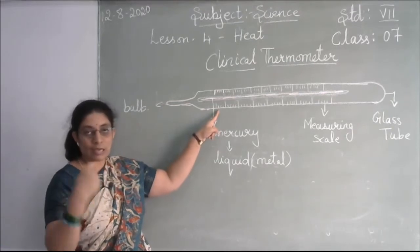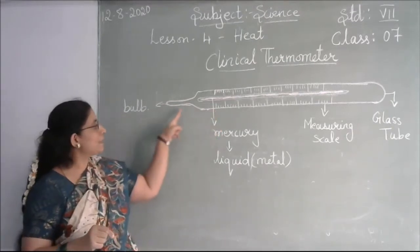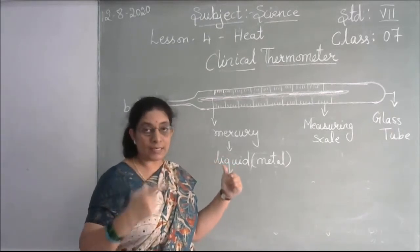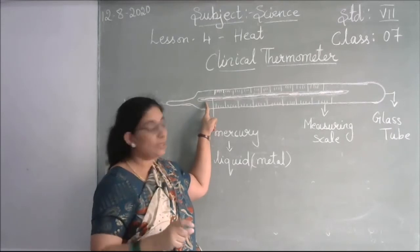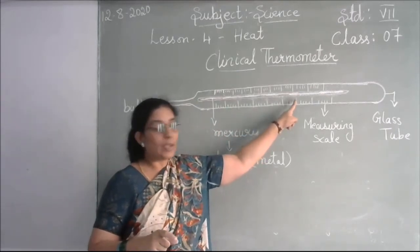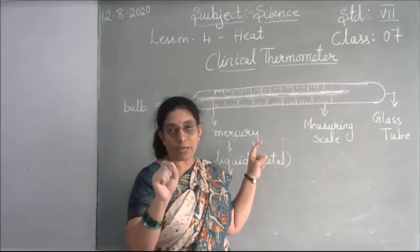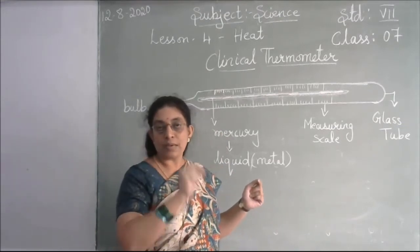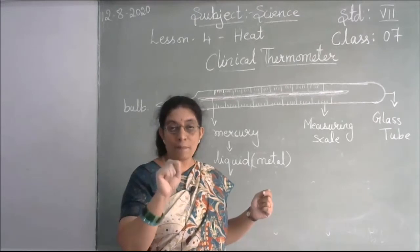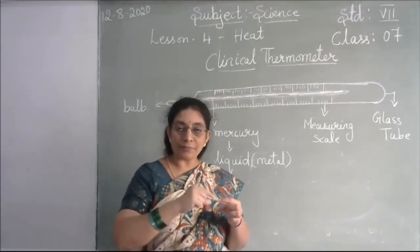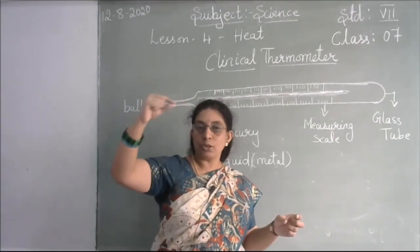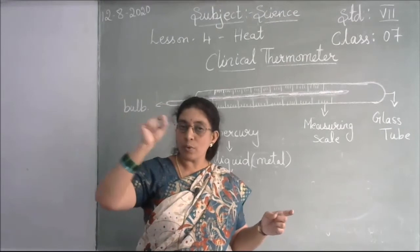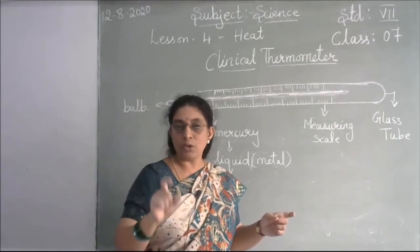After shaking and bringing the mercury to the starting point, the bulb is placed under your tongue. With the heat of your body, the mercury level rises. Where it stops is your temperature. It is kept in your mouth for one minute, after which it is removed and the mercury level is read to tell you how much fever you have.